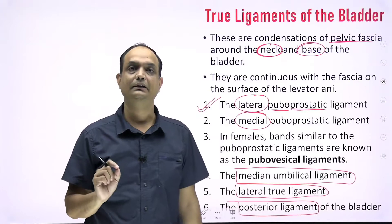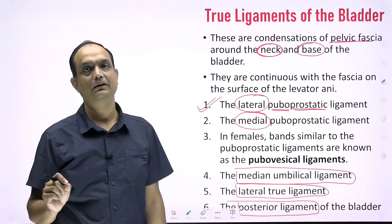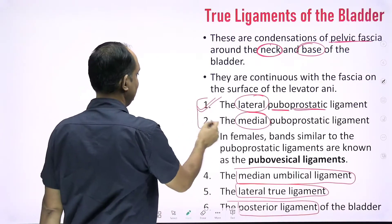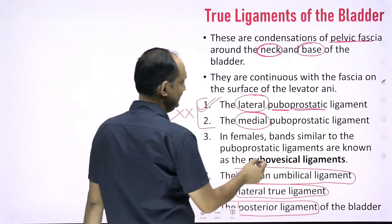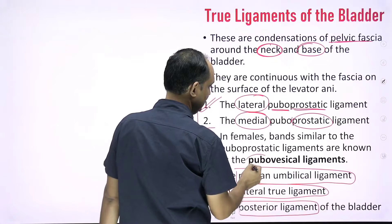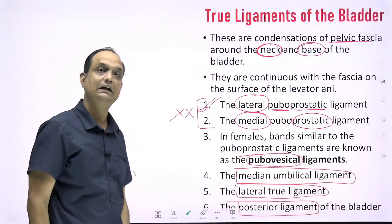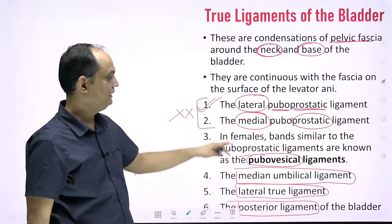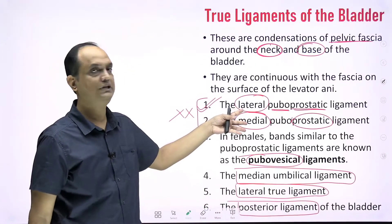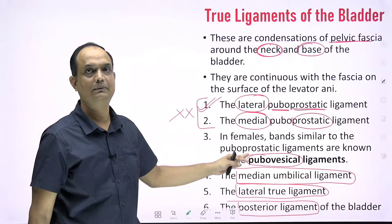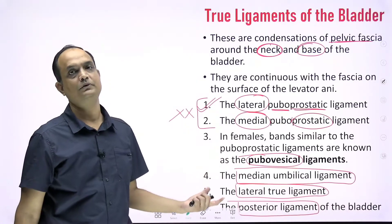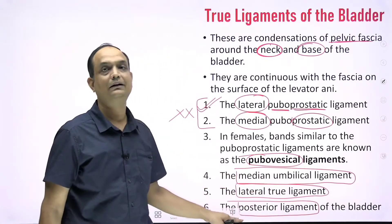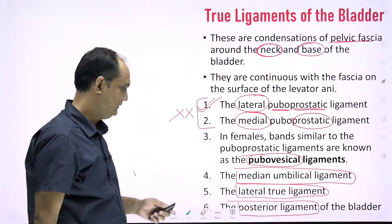Whenever you are writing the supports of the urinary bladder, understand that in females there is no prostate, so the first and second ligaments are not for females. In females, the fascia connects the bladder directly with the pubic bone, and this is known as the pubovesical ligament. So there are puboprostatic ligaments for the male and pubovesical ligaments for the female, and the remaining three ligaments — the median umbilical ligament, the lateral true ligament, and the posterior ligament — are common to both.